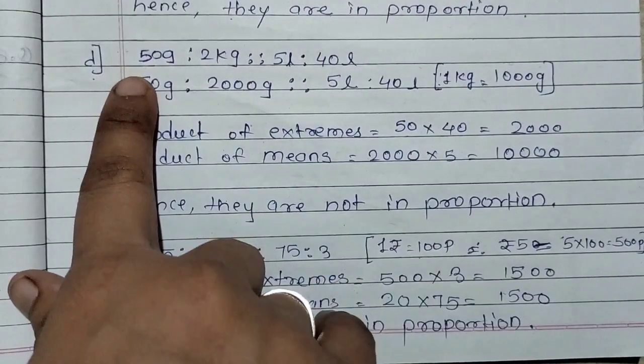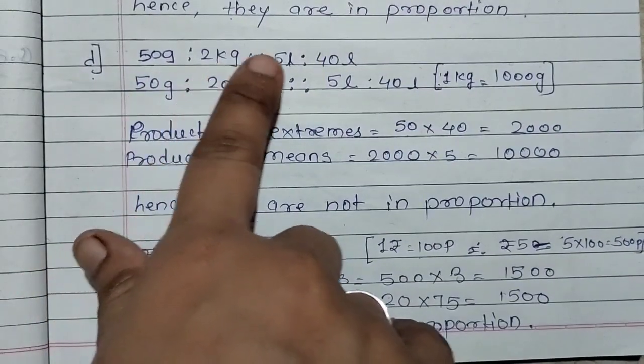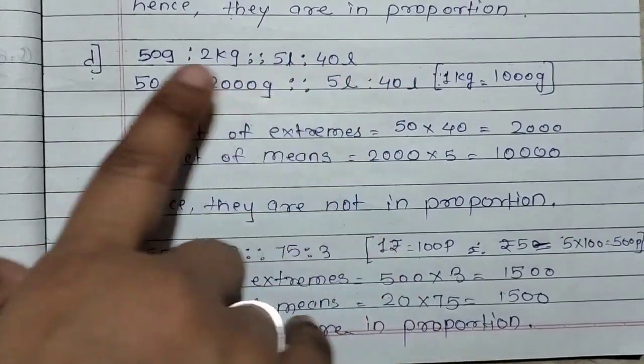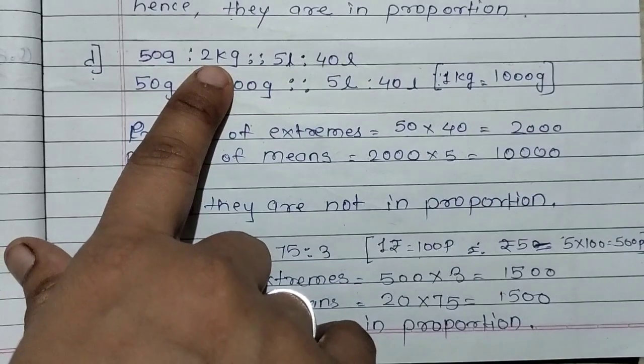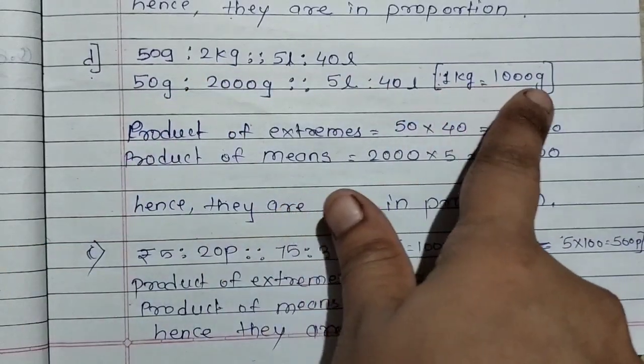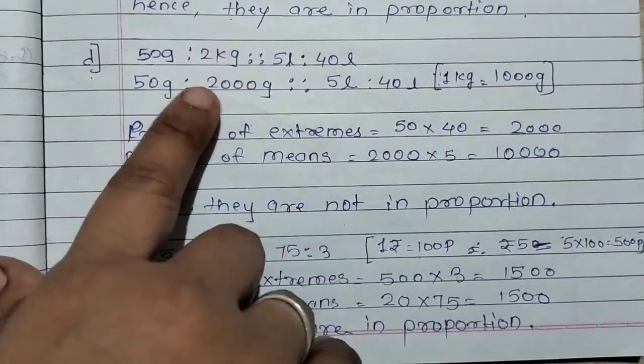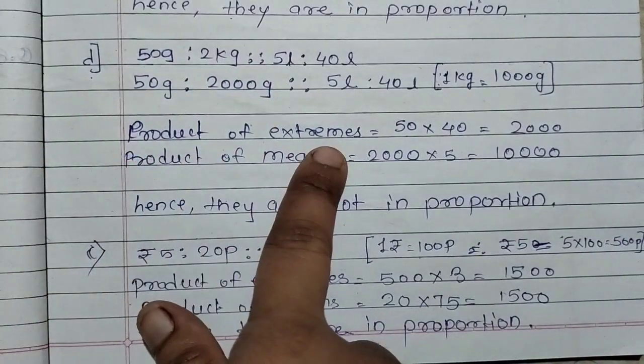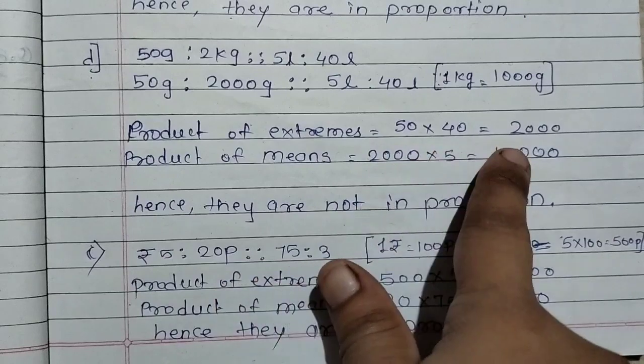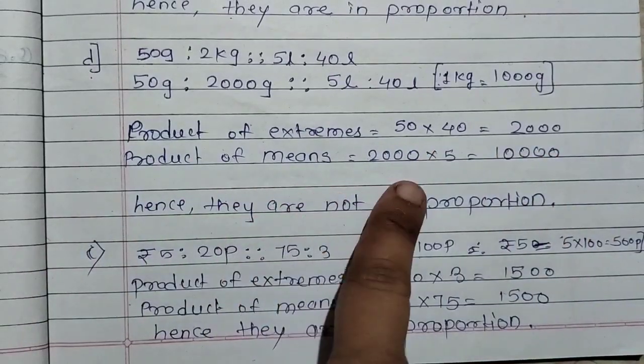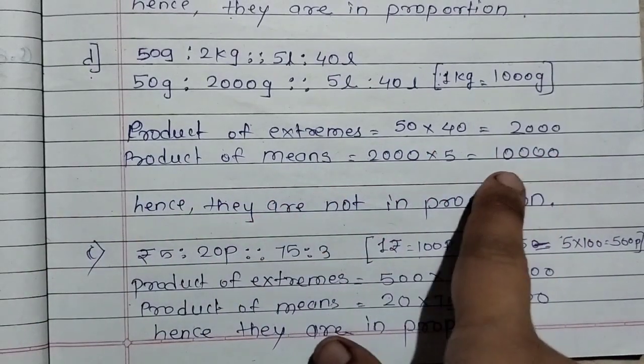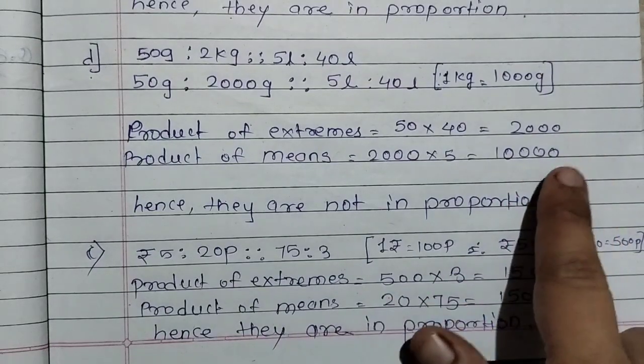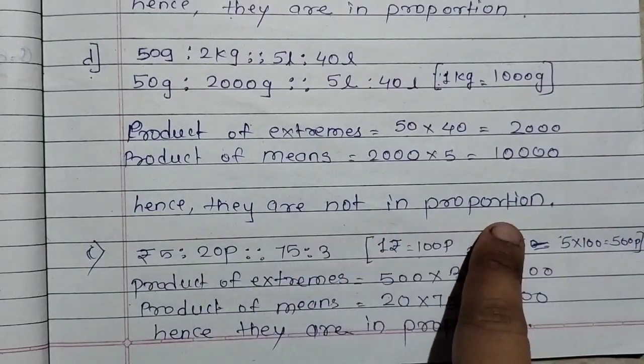Last part d: 50 gram is to 2 kg equals 5 liter is to 40 liter. Here liter is the same unit, but here we have gram and kg. So 1 kg equals 1000 gram. We have to convert 2 kg, so 2 kg equals 2000 gram. So our product of extremes: 50 into 40 is 2000. And product of means is 2000 into 5 is 10000. Okay? So both are different. So they are not in proportion.